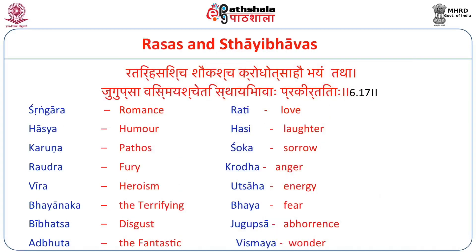For each of these eight Rasas there are eight Sthaibhavas — the permanent mood. For Veera, we saw that there was Utsaha as the Sthaibhava. For Shrungara it is Rati — love. For Haasya, the Sthaibhava is Haasya — laughter. For Karuna Rasa the Sthaibhava is Shoka; only when there is Shoka will Karuna Rasa Swadhana happen. For Raudra the Sthaibhava is Kurodha — anger. For Veera the Sthaibhava is Utsaha; only when Utsaha lasts for a while does Veera Rasa Swadhana happen. For Bhayanaka the Sthaibhava is Bhaya or fear. For Bibhatsa the Sthaibhava is Jugupsa — abhorrence. For Adbhuta the Sthaibhava is Vismaya — wonder. We should be left wondering, like when Hanuman crosses the ocean to go to Lanka.